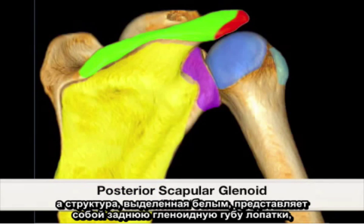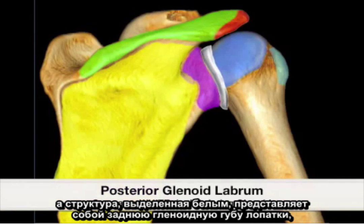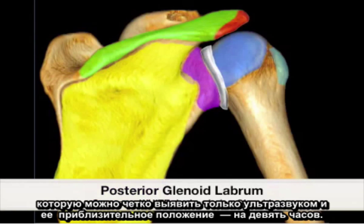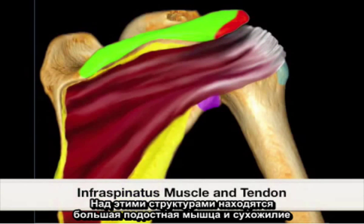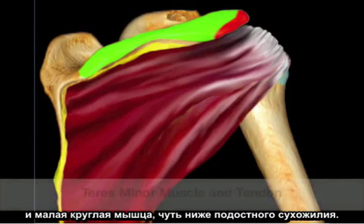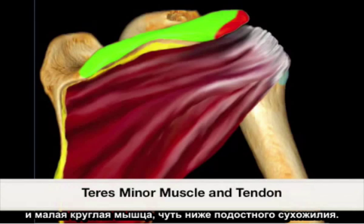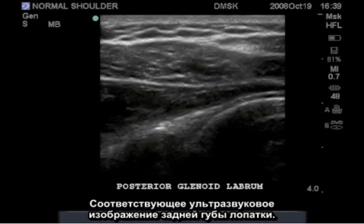The structure here in white represents the posterior glenoid labrum, which is only clearly identified by ultrasound at its approximate 9 o'clock position. Overlying these structures is the large infraspinatus muscle and tendon, followed by the teres minor resting just inferior to the infraspinatus tendon. This corresponds to the ultrasound image of the posterior glenoid labrum.